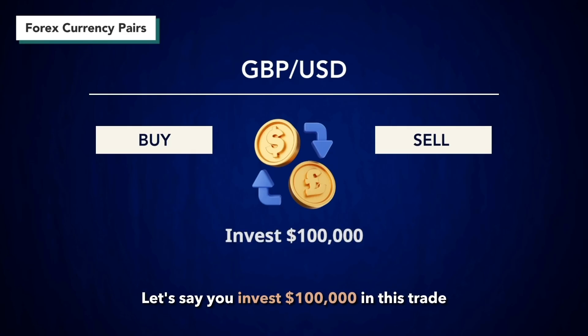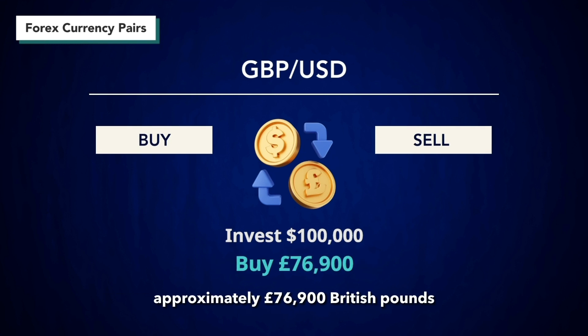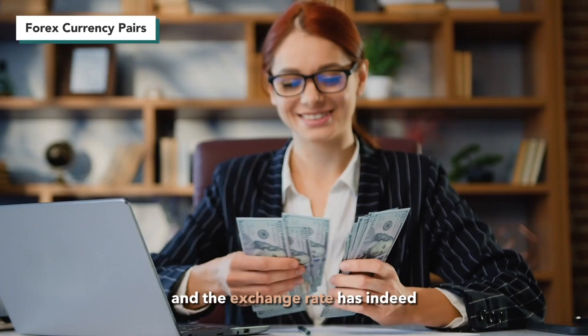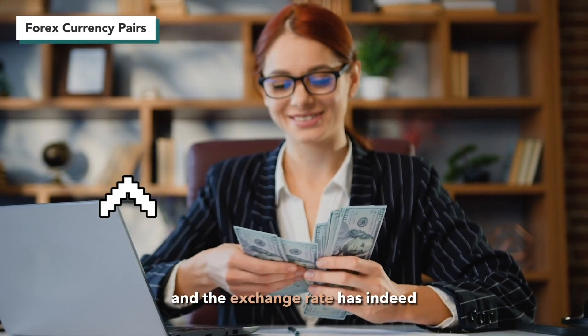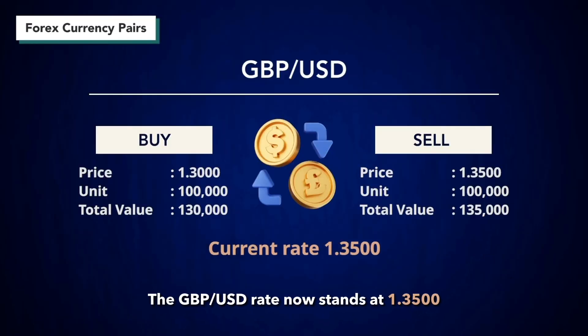Let's say you invest one hundred thousand dollars in this trade. With the exchange rate at 1.3000, your one hundred thousand dollars would allow you to buy approximately 76,900 British pounds. Fast forward a few days and the exchange rate has indeed moved in your favor — the pound sterling to U.S. dollar rate now stands at 1.3500.